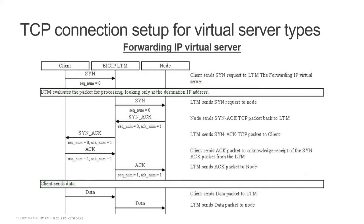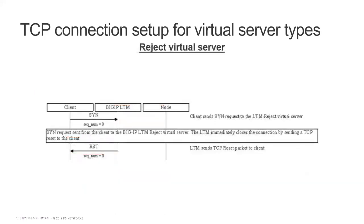This is similar, but we change the IP. Before we were sending on the associated VLAN; this one will look at the routing table and actually send it to the same destination IP address. The same packet arrives, we evaluate it for processing, look at the destination IP on the routing table, and send it there — this is a forwarding IP layer three virtual server. It's quite important to understand the difference between all of them. And we have the reject, which is very straightforward — we receive a SYN and we just terminate the connection.